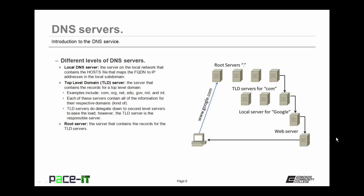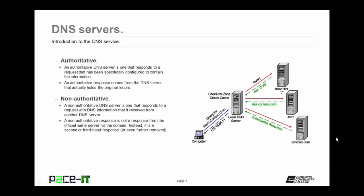Then there's the root server — the server that contains all of the records for the TLD servers. If you're looking for a TLD that is somewhat unknown, you will actually go to the root server, which will then pass you onto the appropriate TLD. Then there are authoritative servers and non-authoritative servers. An authoritative DNS server is one that responds to a request and has been specifically configured to contain the requested information — the authoritative response comes from the name server that actually holds the original record.